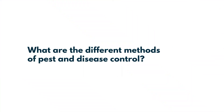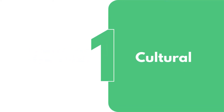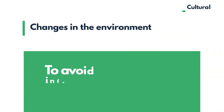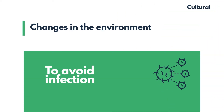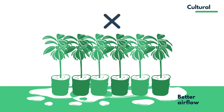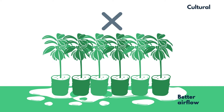What are the different methods of pest and disease control? 1. Cultural Practices: These are changes in the environment that can be made to avoid the spread of a pest or disease. For example, adjusting the density of plants to favor better air flow in the nursery.